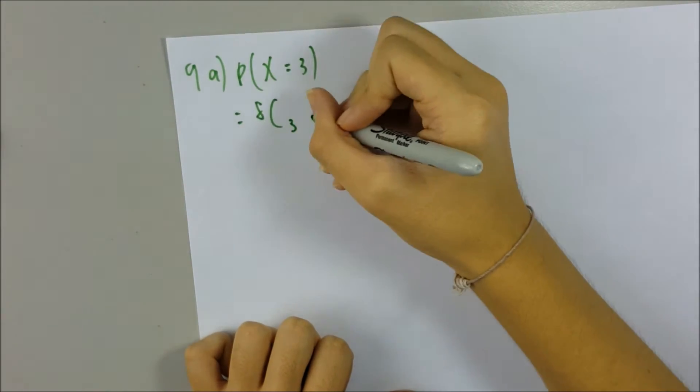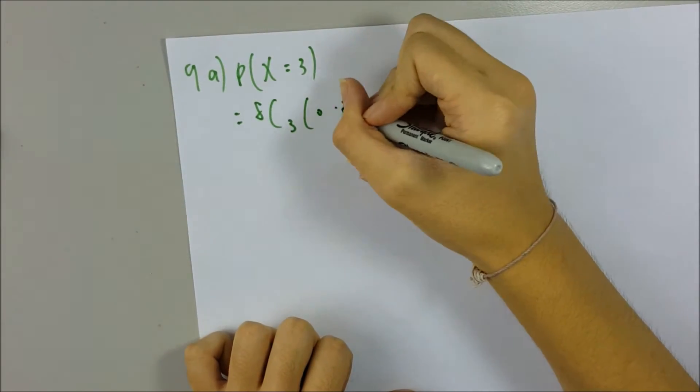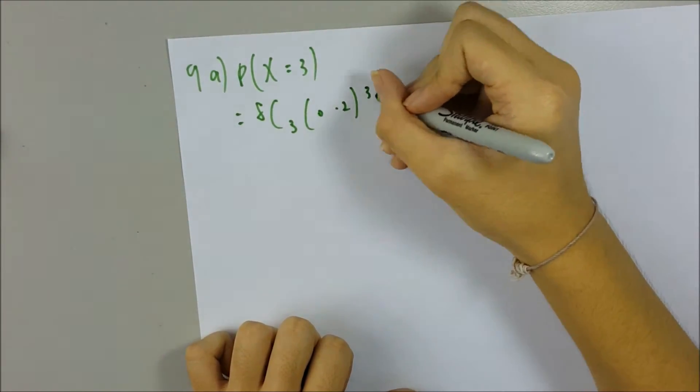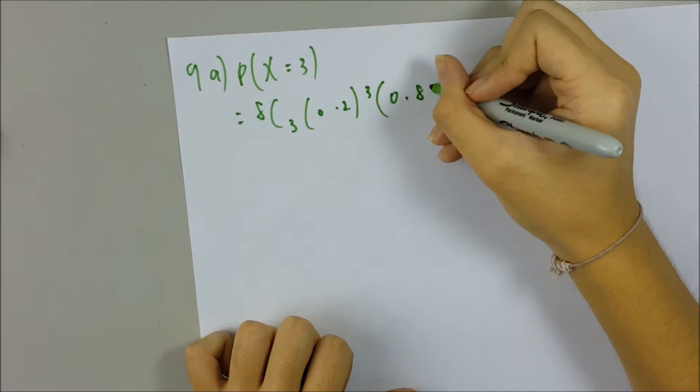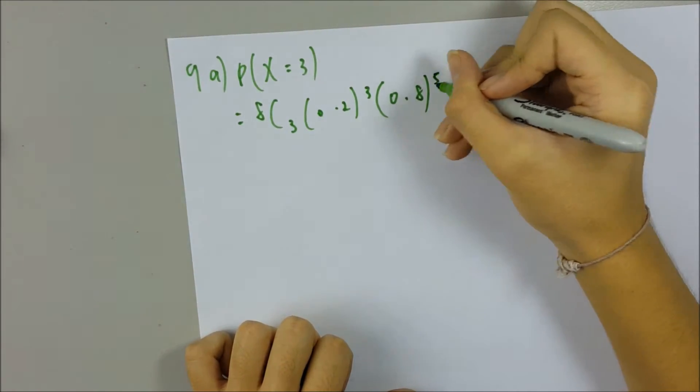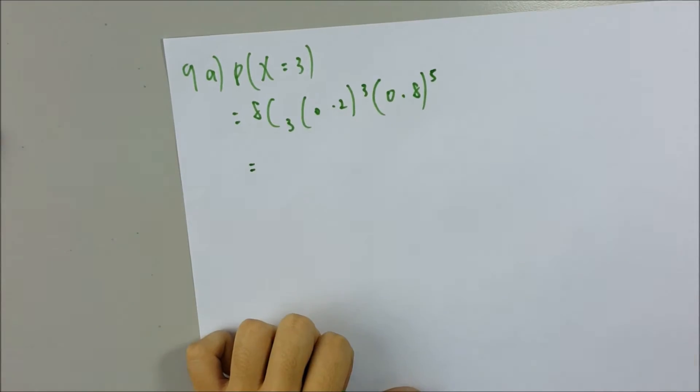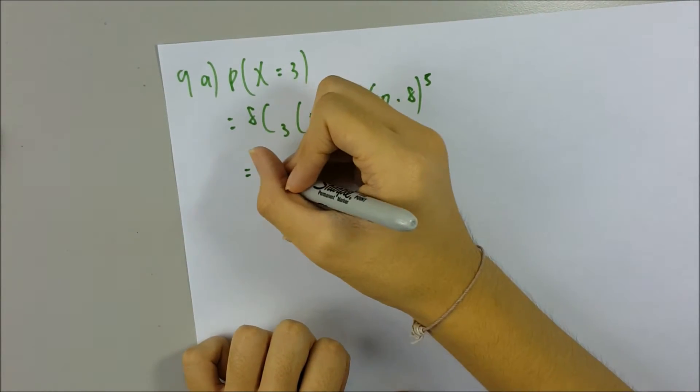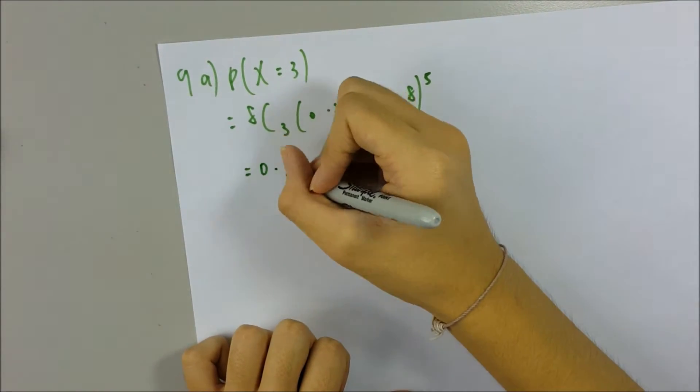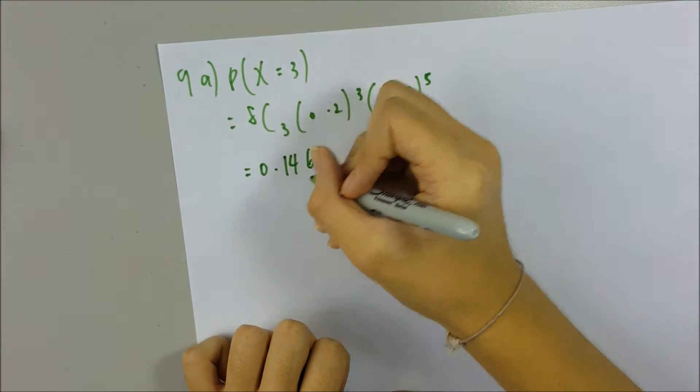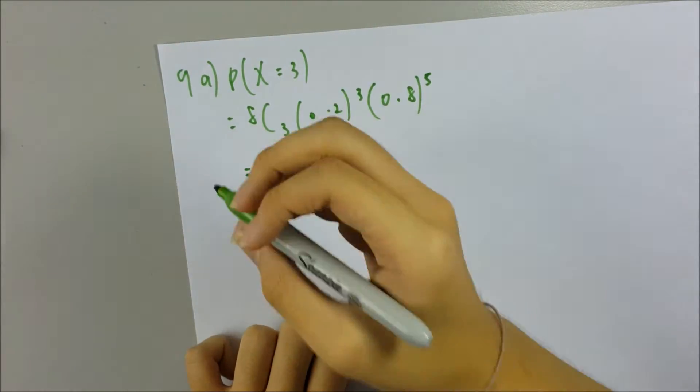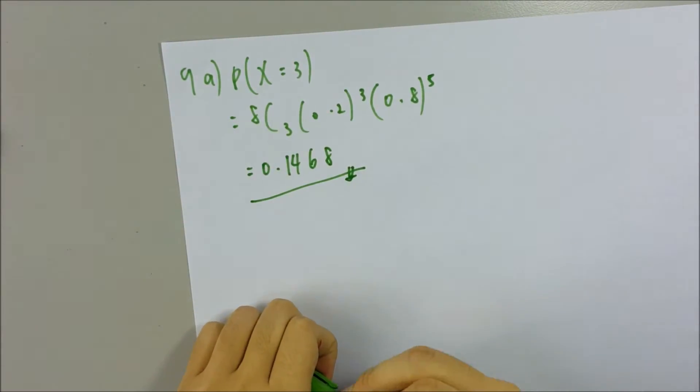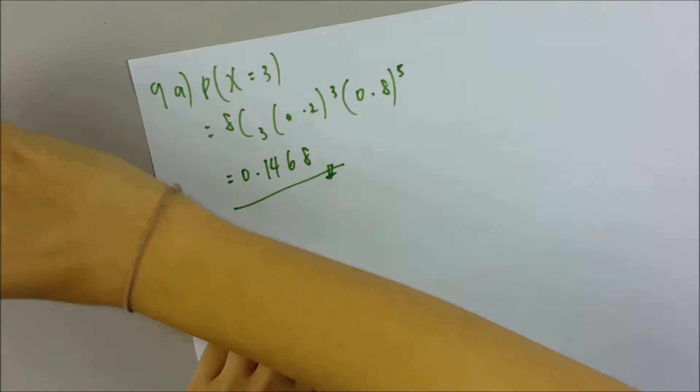Then you press on the calculator, you can find the answer 0.1468. So this is your answer for question number 9a. Now for question number 9b, part (i), you want to find the value of M.